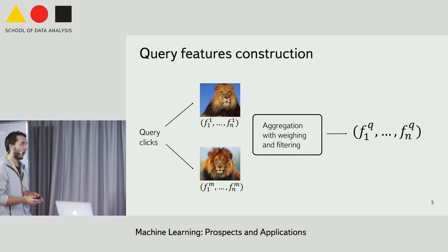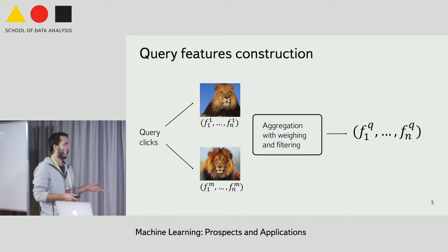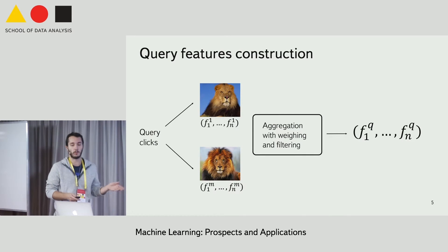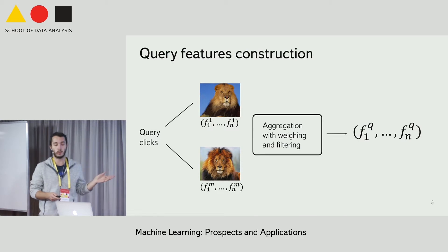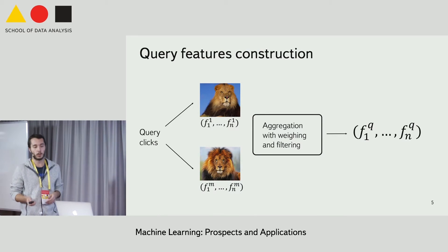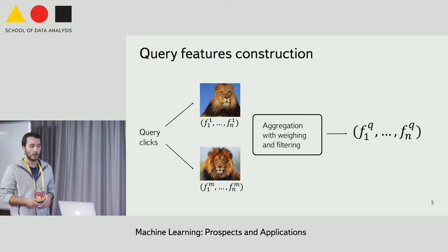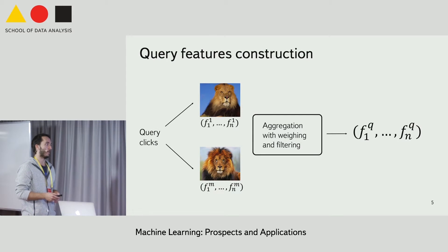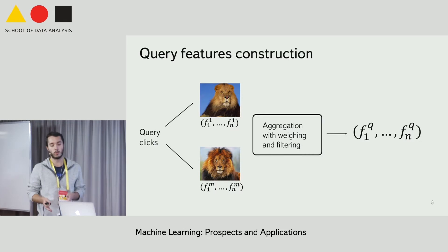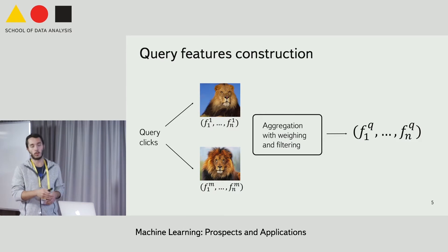we can use simple aggregation with averaging using clicks as weights, and some heuristics to filter out bad examples — like filtering out images having low impression counts and images that have been clicked across a large number of unrelated queries.